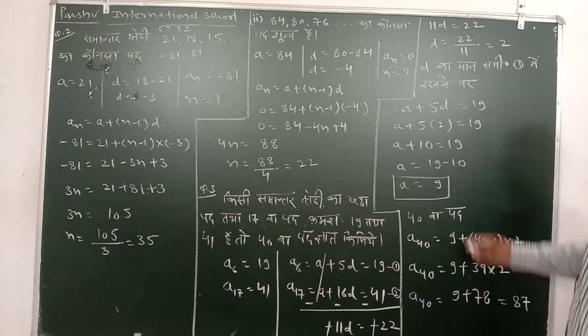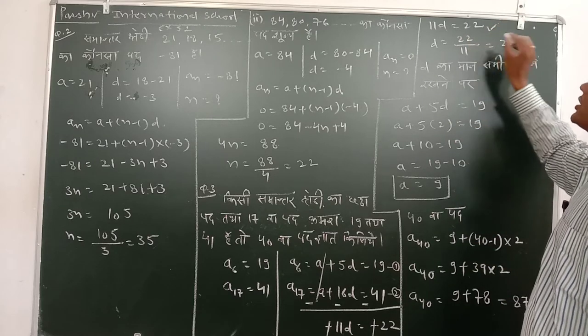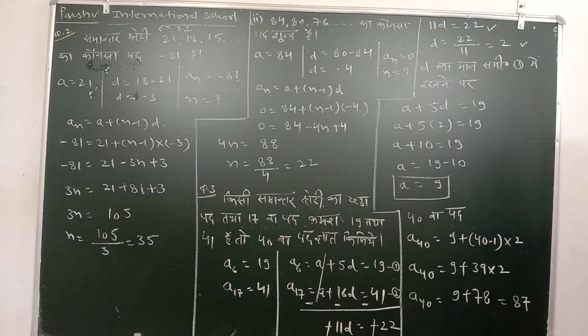To yahan se 11d barabar, yakar 20 hai. So d equals 1, 22 to 11. Which means what? D equals 2.